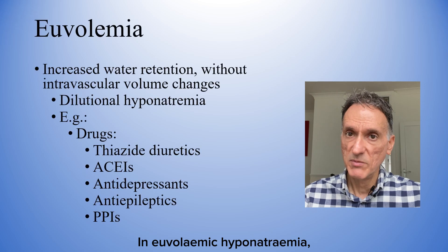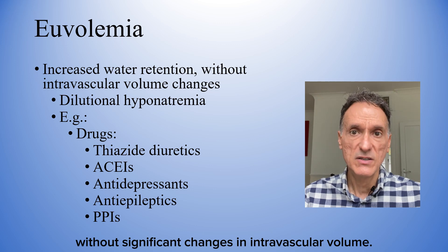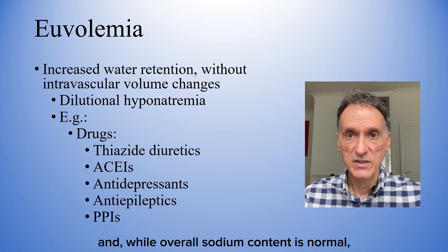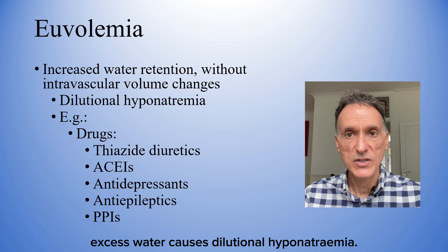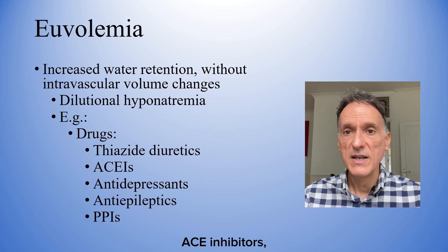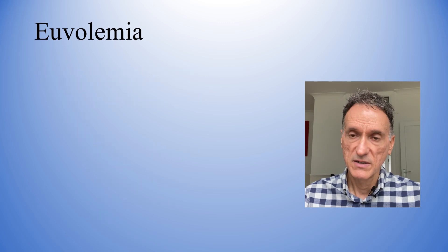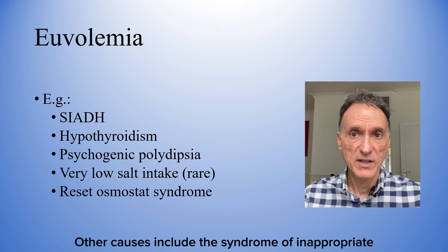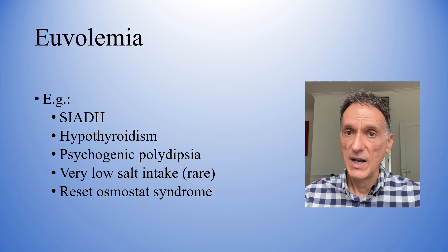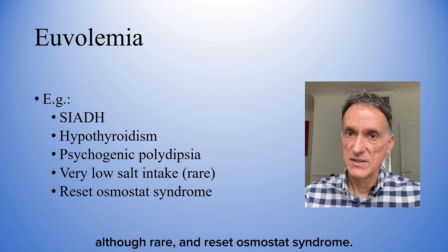In euvolaemic hyponatremia, the issue is typically increased water retention without significant changes in intravascular volume. Sodium loss is not prominent, and while overall sodium content is normal, excess water causes dilutional hyponatremia. Examples include medications like thiazide diuretics, ACE inhibitors, antidepressants, antibiotics, or proton pump inhibitors. Other causes include the syndrome of inappropriate ADH secretion, hypothyroidism, and psychogenic polydipsia. Additional causes are very low salt intake, although rare, and reset osmostat syndrome.